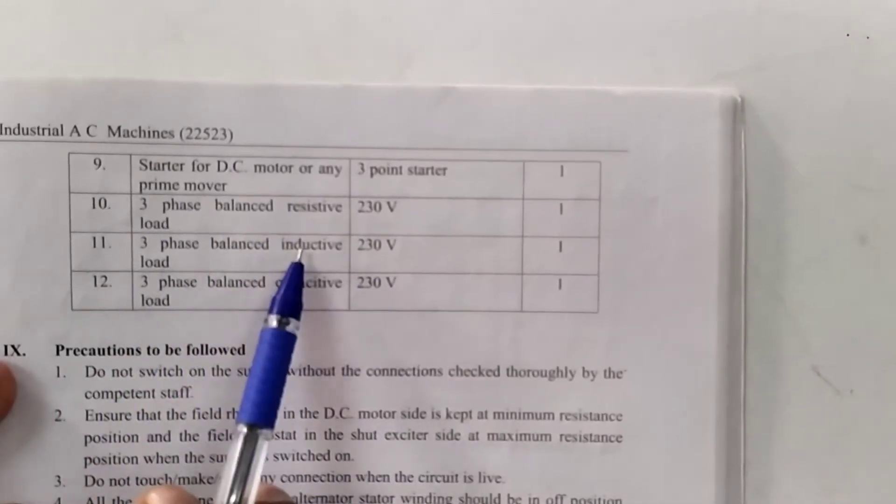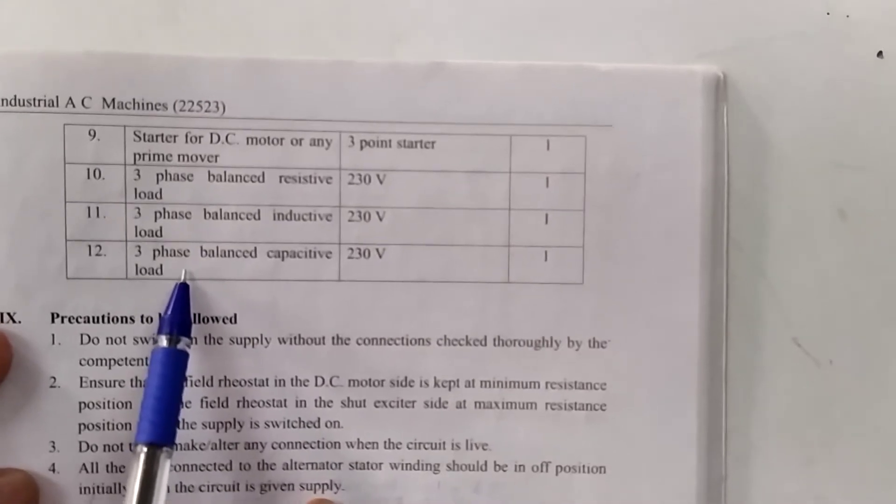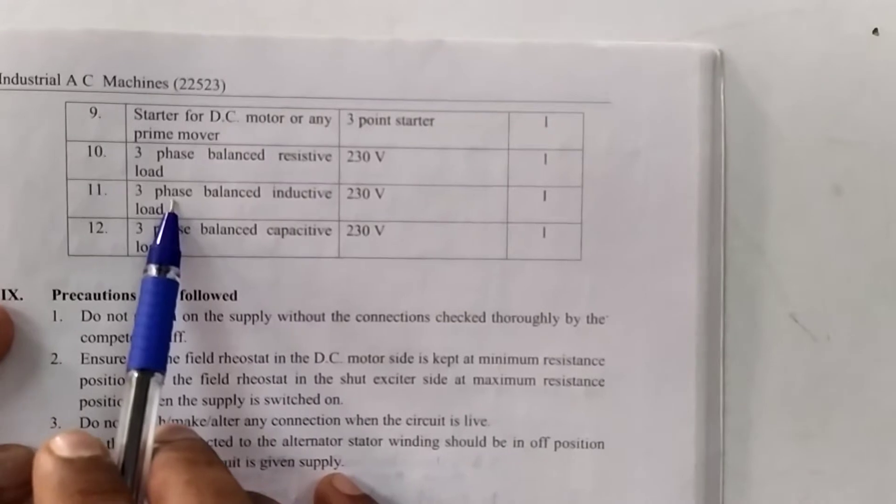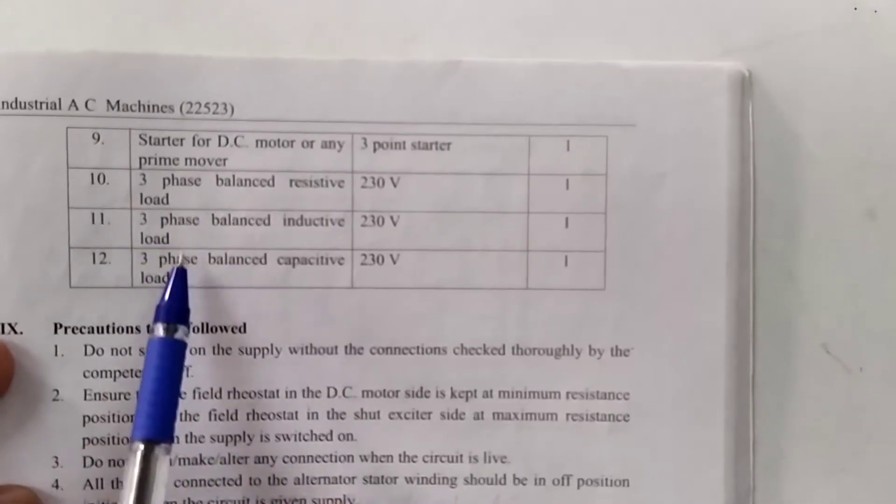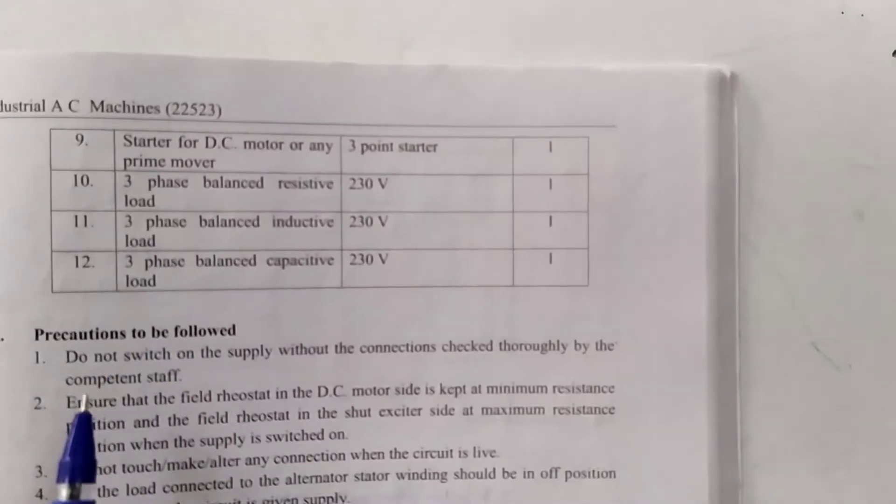Starter for DC motor for starting purpose. 3 phase balance resistive load, 3 phase balance inductive load and 3 phase balance capacitor load. We are note down any 4 consecutive reading out of these loads and determine the voltage regulation and plot.